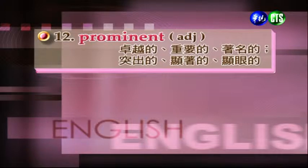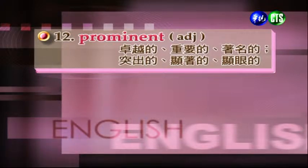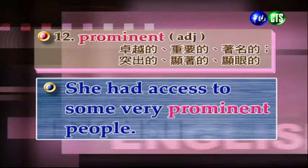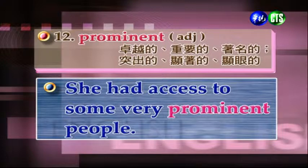下面一個單字：Prominent。Prominent，形容詞，卓越的、重要的、著名的、突出的、顯著的、顯眼的。例句：She had access to some very prominent people. Access是接近、接近的途徑。她可以接近一些很重要的名人。